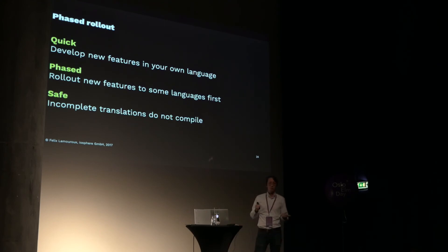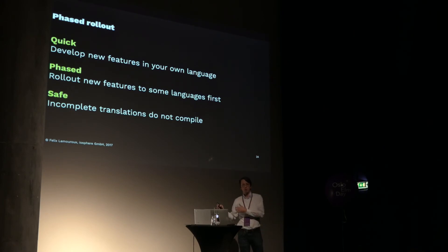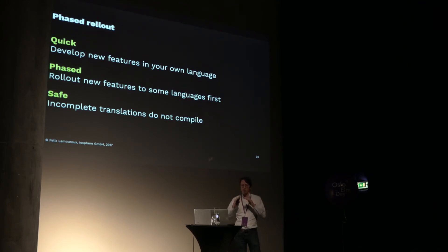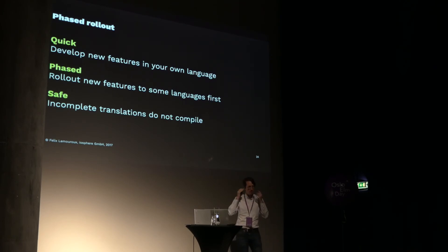Contrary to the runtime approach, you can also have phased rollouts and start developing quickly with your own language, then add new features to some languages first and expand as translations come in. Or in our case, the product owner finalizes the wording of the buy button before you roll it out. It's also very safe because incomplete translations do not compile — so you can't accidentally forget to add a label in Bokmål and Nynorsk.